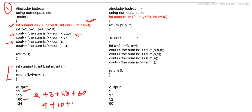So this is how the first example works. In this case, we declared the default arguments before the function definition — the default argument declaration comes before the function definition. In the second example, however, the function definition is placed before the main function, so inside the function definition itself we have declared the default arguments.